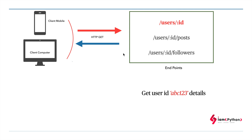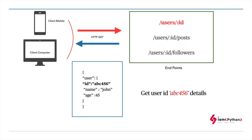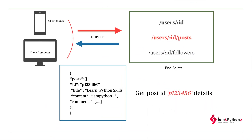The response comes back with information in JSON format - you can see that for ABC123 we get name and age. If next time I want different user details, say ABC456, I need to send another request to the endpoint to get those details. And if I want post details, I have to hit a different endpoint like user slash ID slash post to get the post details. So we keep hitting different endpoints, each returning some data in JSON format.